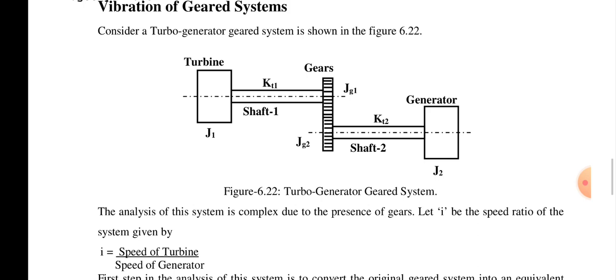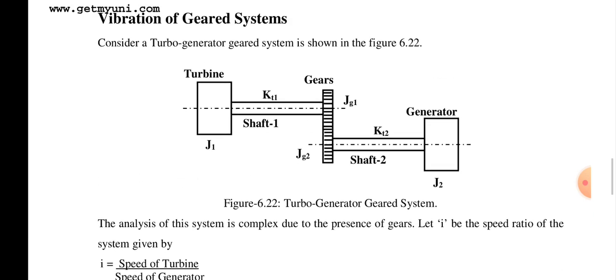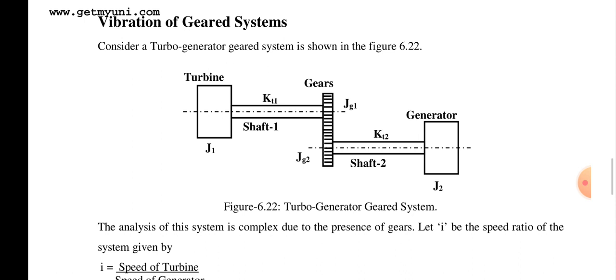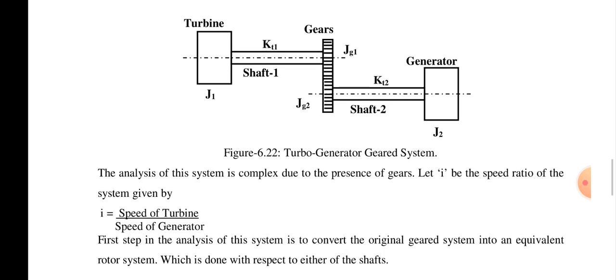Let i be the speed ratio, defined as the speed of the turbine to the speed of the gears. The figure shows the turbine, then gears, then the generator. The turbine converts hydraulic energy, pressure energy, or steam energy into mechanical energy. J1 is the polar moment of inertia of the turbine shaft, with torsional stiffness kt1.